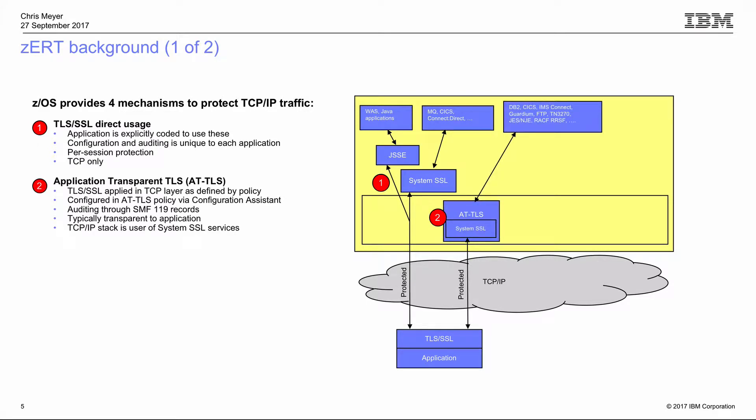Communication Server takes it a step further, making System SSL services available to pretty much any TCP application. It calls System SSL on the application's behalf based on policy you write — using our policy agent. You describe the traffic through that policy: IP addresses, ports, inbound or outbound connections. You also describe the type of TLS protection to apply, and when a connection is established, the TCP/IP stack looks up the AT-TLS rule and passes the right parameters to System SSL.